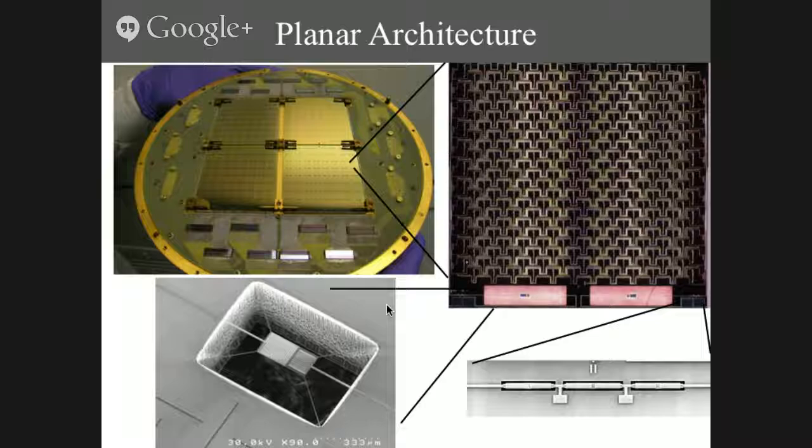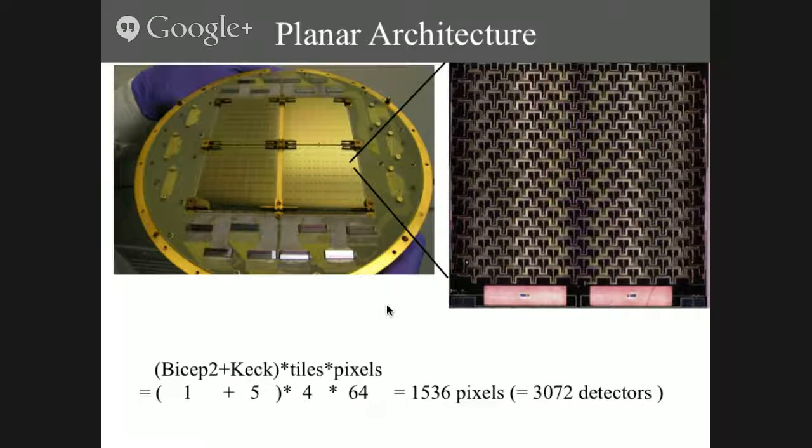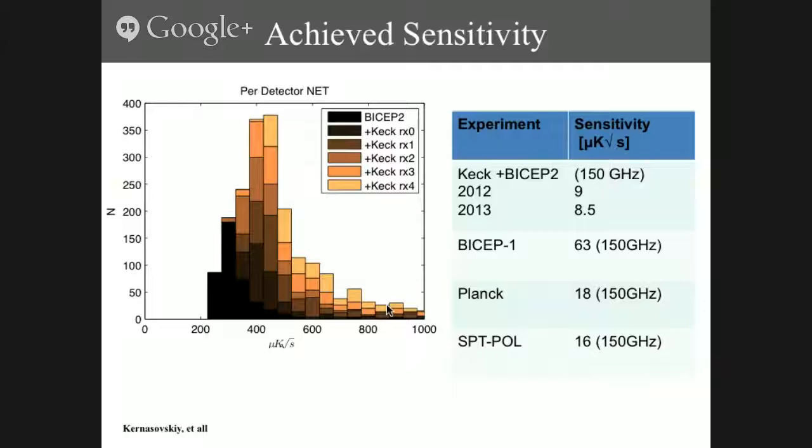So I am going to presume that people here either know how TESs work or don't particularly care, and I'm not going to belabor the physics. But rather, I'll move on with the more novel aspects of the design, which again is that it's completely planar. And so as a result, with a set of cameras, we had over 1,500 pixels on the sky, in excess of 3,000 detectors. And as a result, we can get sensitivities that look like this. This is a histogram of current detector NETs.